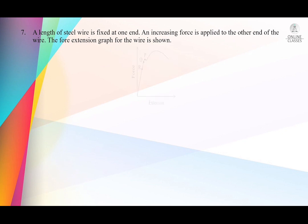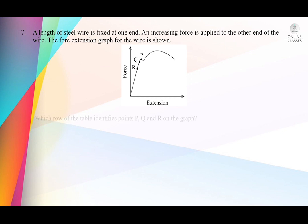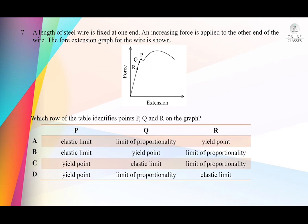Question number 7: a length of steel wire is fixed at one end and an increasing force is applied to the other end. The force-extension graph for the wire is shown with three special points R, Q, and P marked. The question asks which row of the table correctly identifies points P, Q, and R — given elastic limit, limit of proportionality, and yield point.